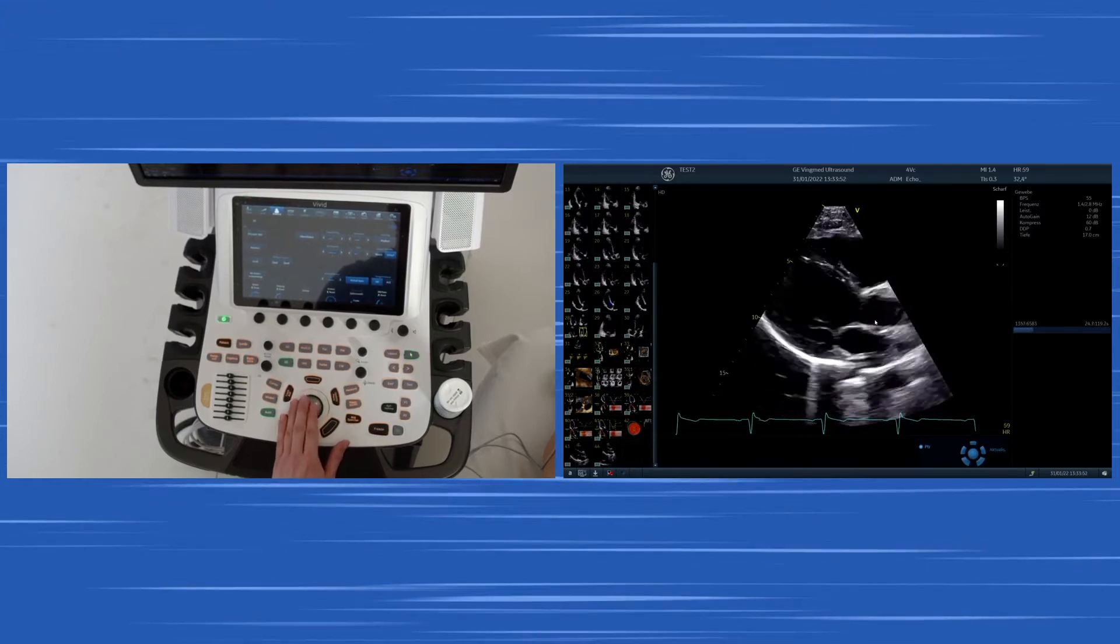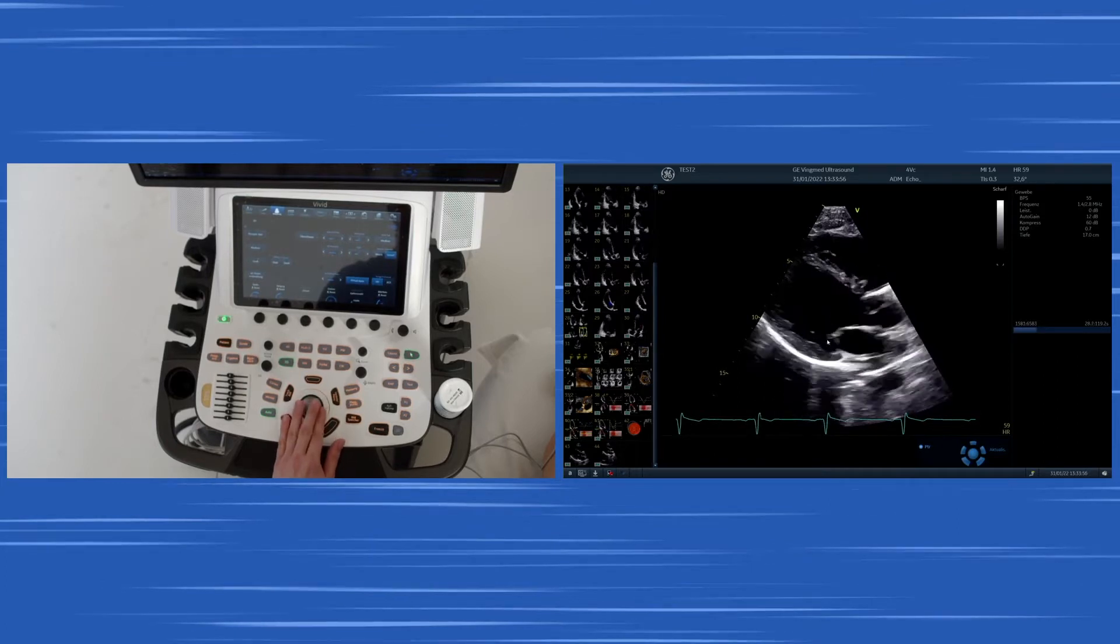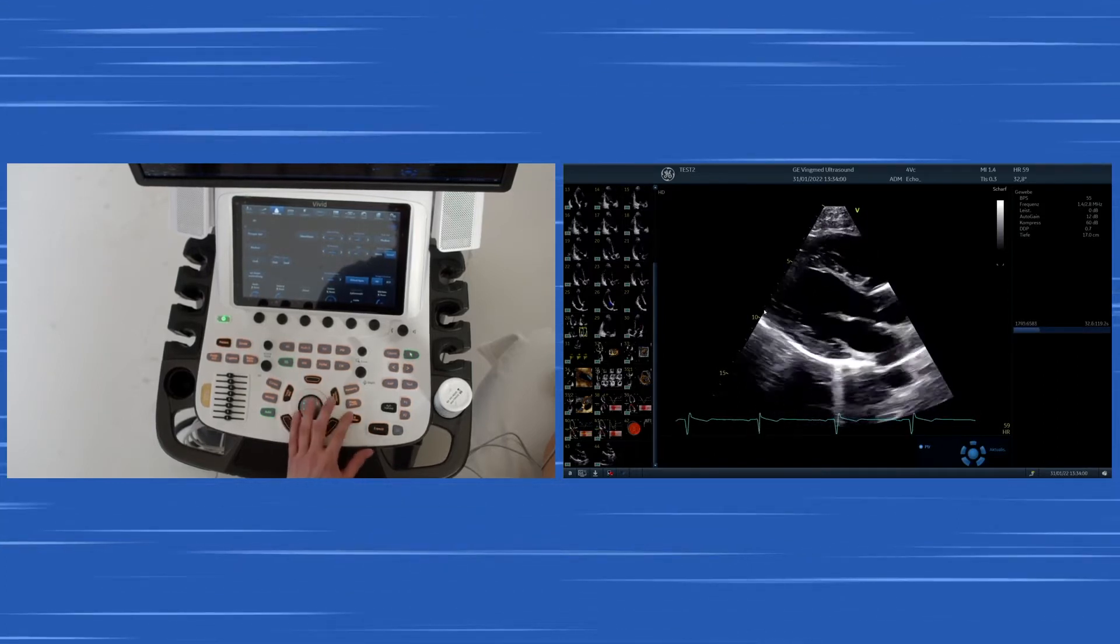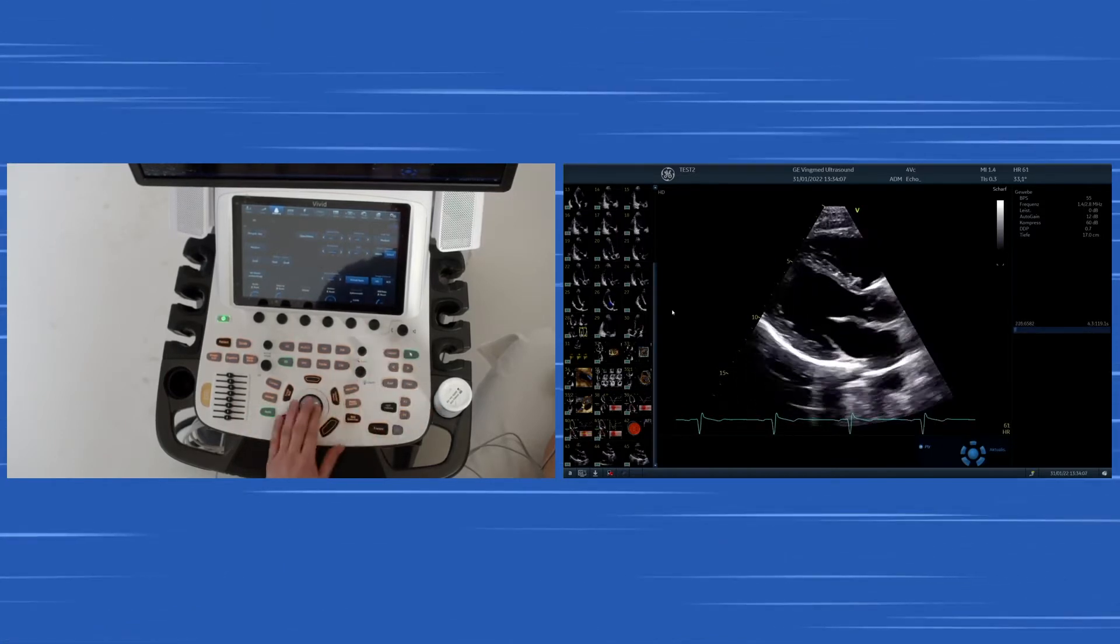Here the right coronary cusp and if we go a little bit more to the right in the image that's the aorta ascendens. This is the mitral valve, the papillary muscles. Now we go a little bit into detail of the structures.